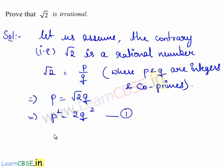This can be written as p square by 2 is equal to q square. From this, we understand that 2 divides p square, which also implies that 2 divides p. Therefore, 2 is a factor of p.